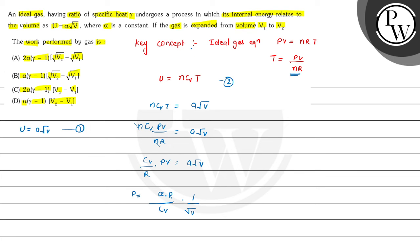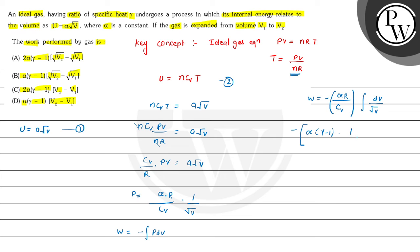Now we find the work done. W equals negative integration of P dV, where dV is the change in volume and P is the external pressure. Substituting the pressure expression: W equals negative alpha R upon Cv, integrated with dV over root V. After integration, this gives minus alpha (gamma minus 1) times 2 root V, evaluated from V1 to V2.